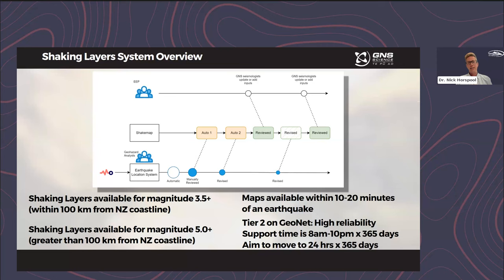There is no single one shaking layer — there are multiple versions that occur over time. We anticipate the maps being available within 10 to 20 minutes of an earthquake, likely potentially within 10 minutes. Currently the system is run on what we call the Tier 2 level within GeoNet, a very high reliability system that's always up. If something goes wrong, we will support reviewing that during daylight hours — 8am to 10pm, 365 days of the year. We are aiming to move to a Tier 1 system, which would mean 24-hour support, 365 days a year, into the near future.